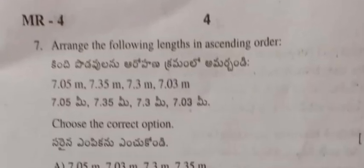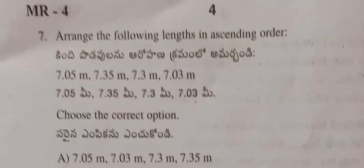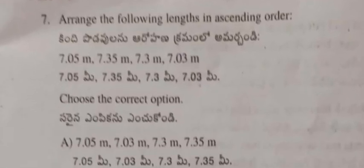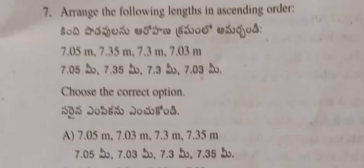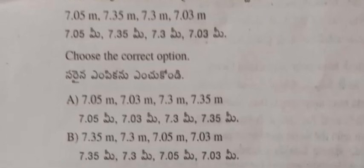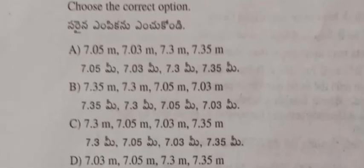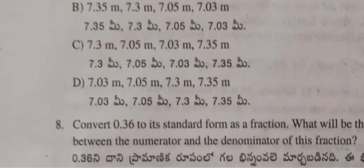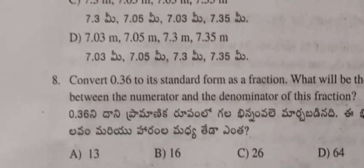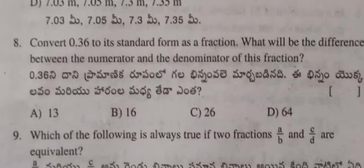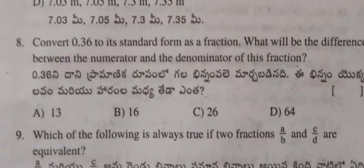Question 7: Arrange the following lengths in ascending order: 7.05 m, 7.35 m, 7.3 m, and 7.03 m. Options A, B, C, D are given — select the correct one.